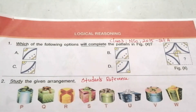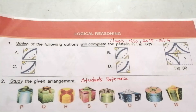Hi my dear students, welcome to Students Reference. If you are new to this channel, please subscribe and click the bell icon to get notifications for upcoming videos. Today we are going to discuss the 2015 Set A NSO question paper for class 3 students. I have already uploaded some other IEO, NSO, and IMO question papers for class 3 students — please go to the playlist in Students Reference and click Olympiad Class 3.